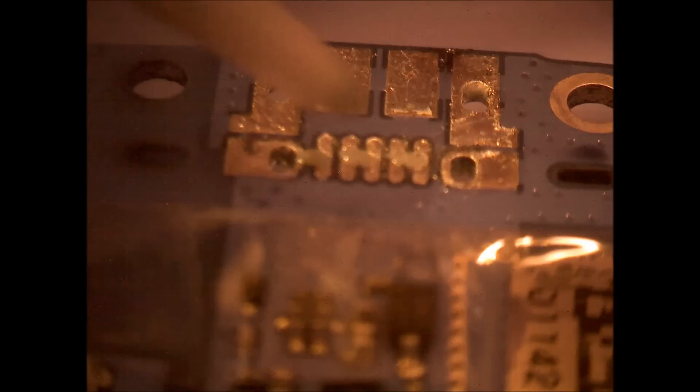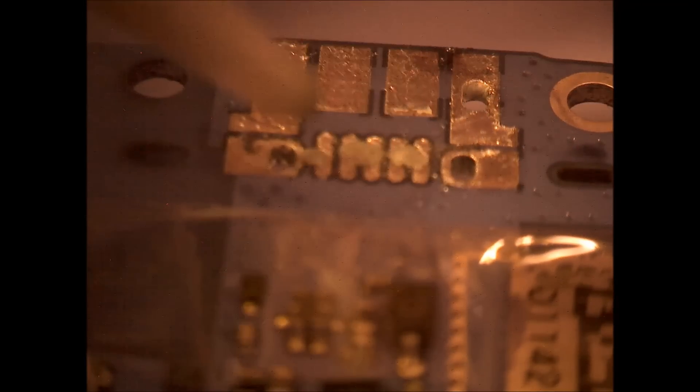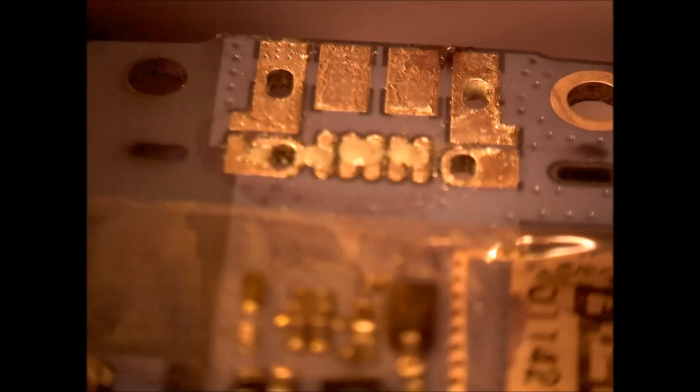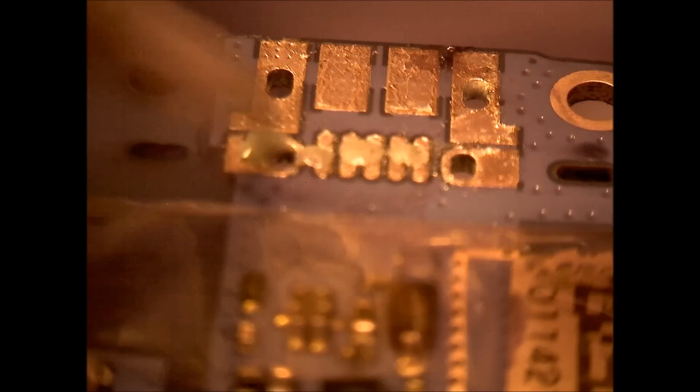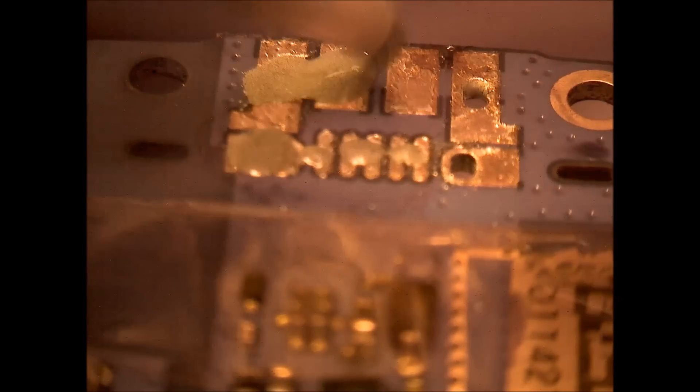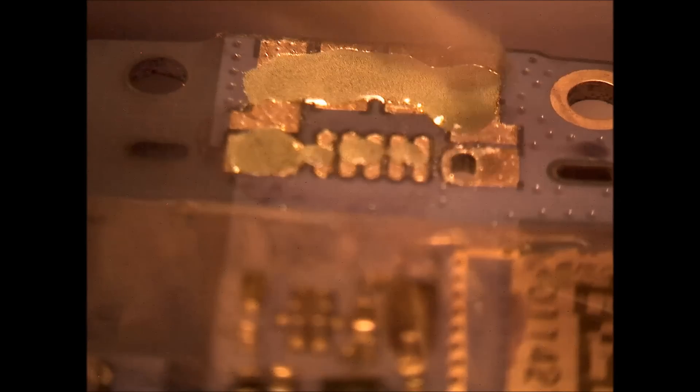Right here is where we're taking the solder paste and we're applying that to the different points. You can put as much as you want without it being super excessive on all of the through holes and then the two at the top that you see there.